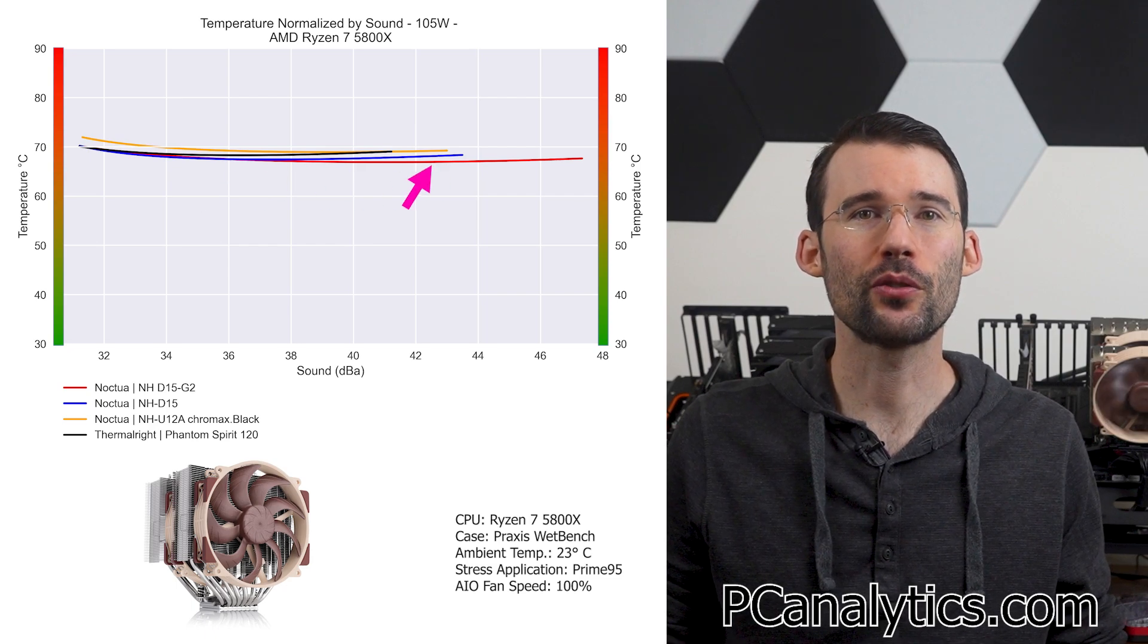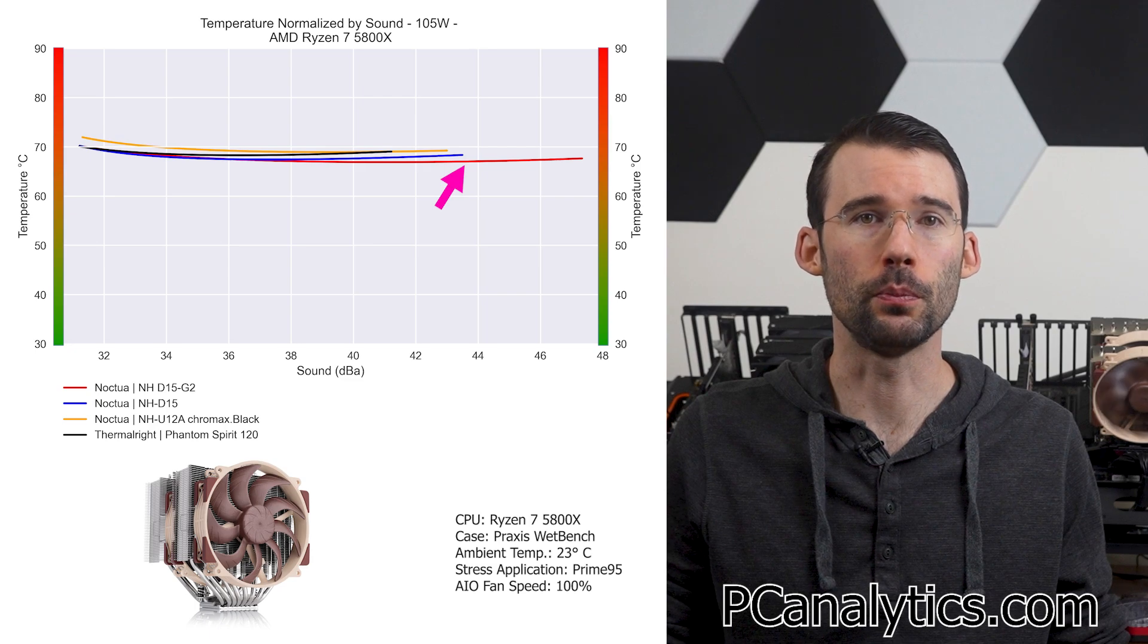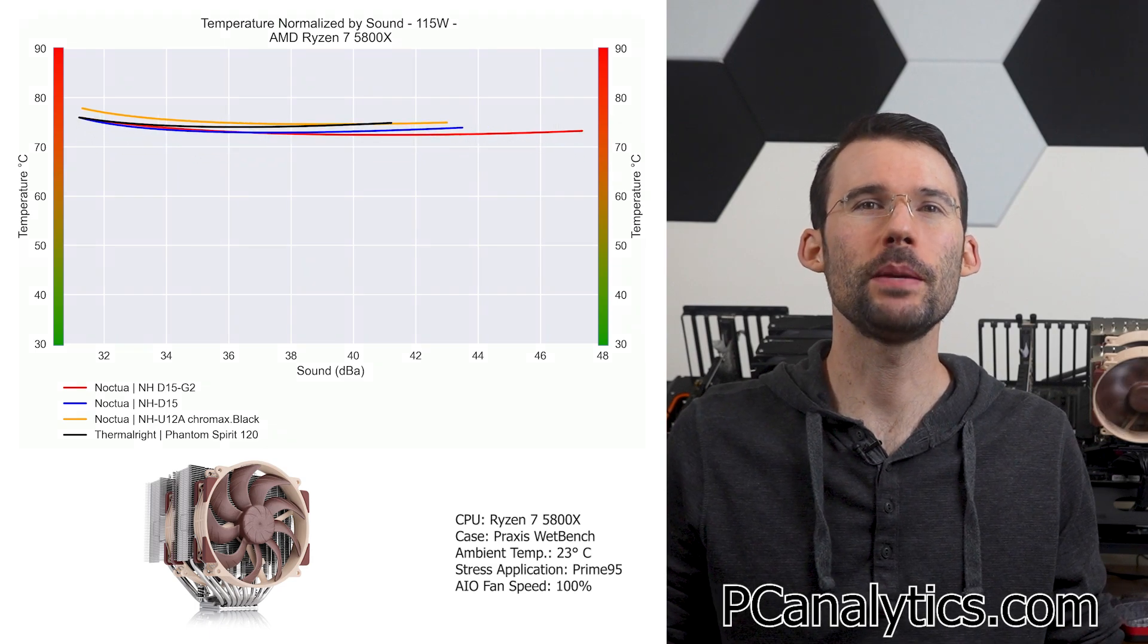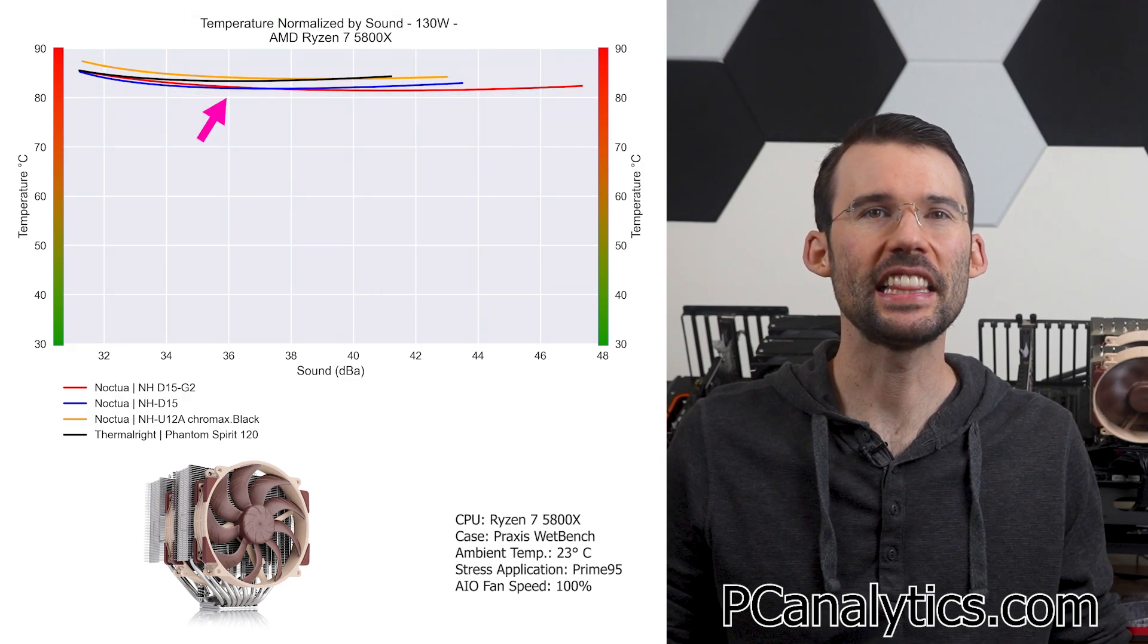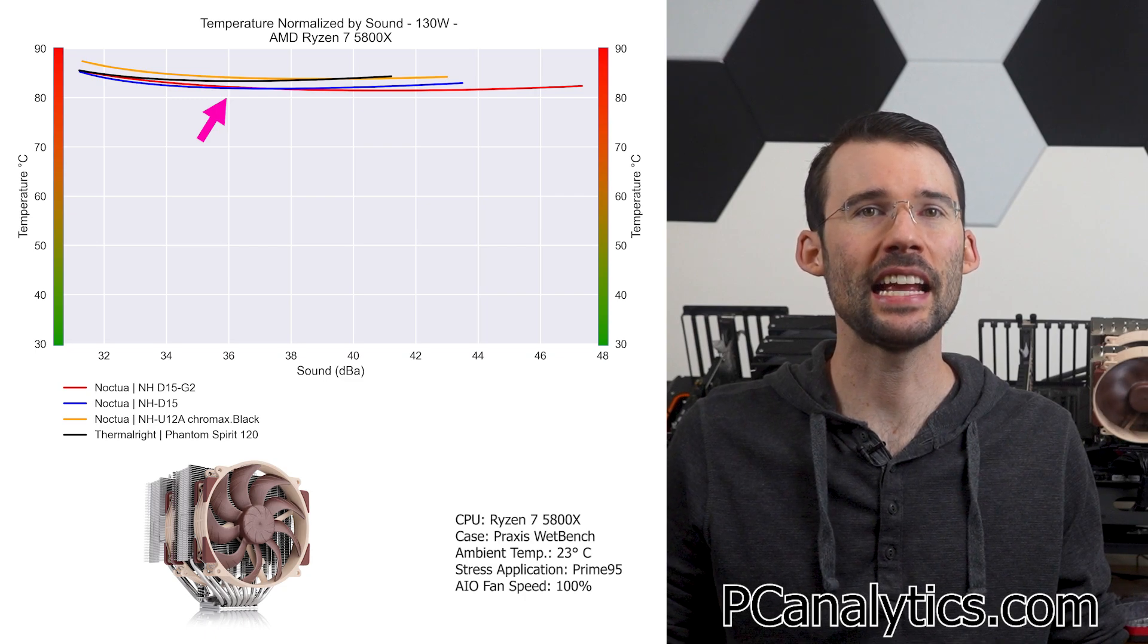However, as we increase the noise, we see that the NH-D15G2 pulls ahead slightly. And when we push the CPU to 130 watts, we can see that the NH-D15G2 maintains a slight lead.